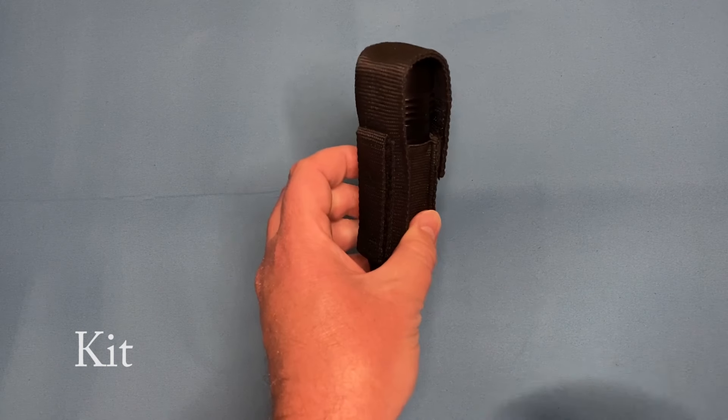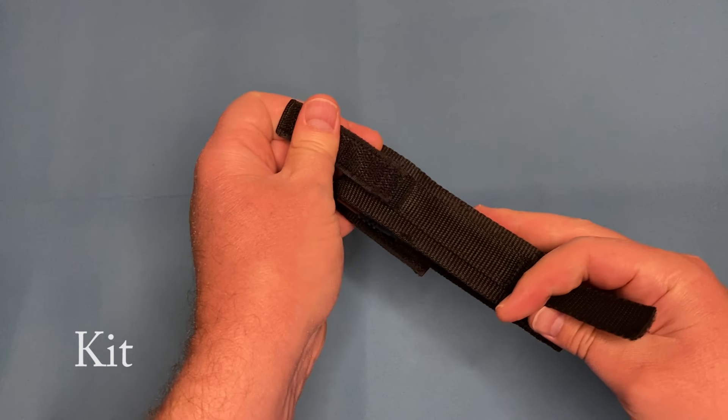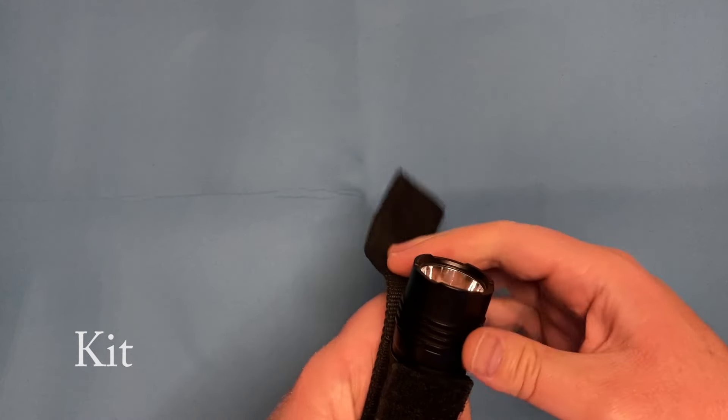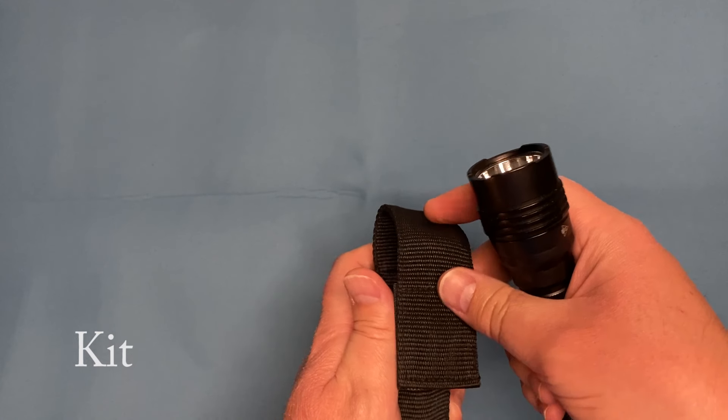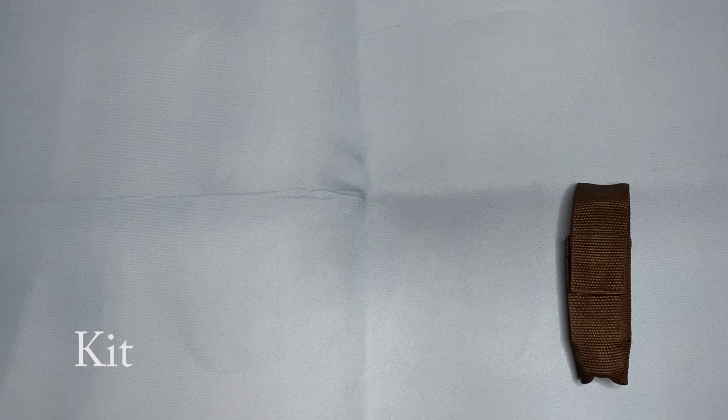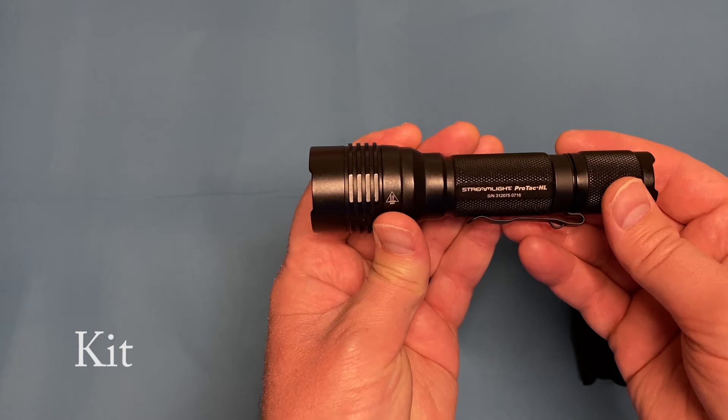Moving on to the kit option. This one comes with this Velcro holster and it also has this Velcro belt clip that you can wear should you find that necessary. I don't wear this on my belt. This is part of my kit. Some people might call it a go bag, some people might call it a range bag. In any case, this is the Streamlight ProTac HL.